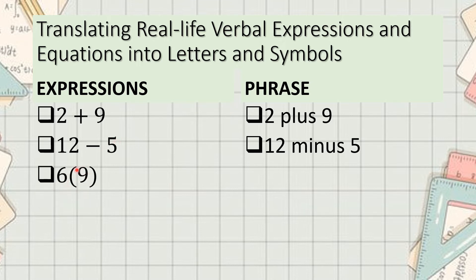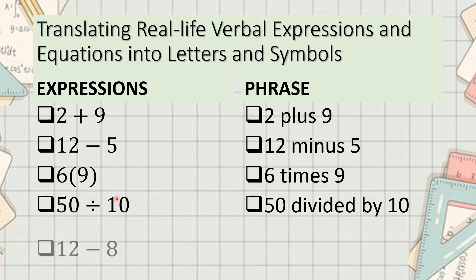This is 12 minus 5. For this one, the parenthesis is also used in multiplication. 6 parenthesis 9 means 6 times 9. Then 50 divided by 10, and lastly 12 minus 8. But it is not that simple because these phrases here are not the only way to say or read these expressions.